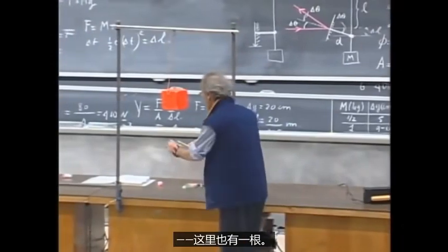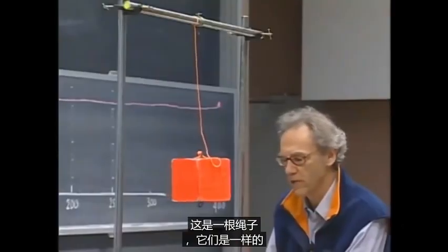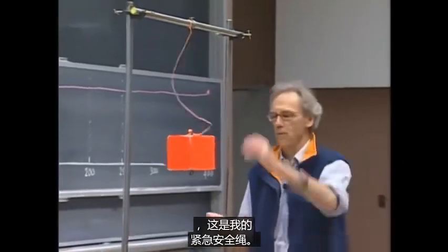So here's a very thin wire. You can't see it very well, and here's one too. It's a string, and they are identical, and this is my emergency safety rope.